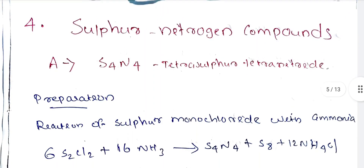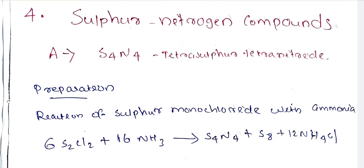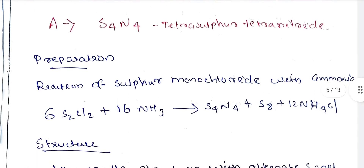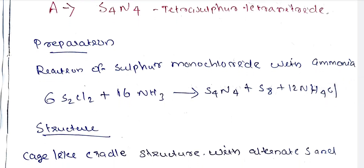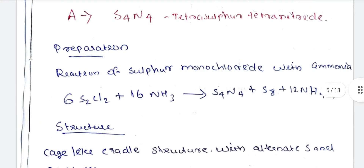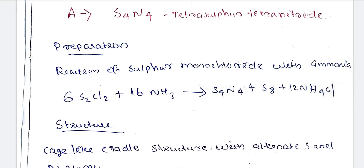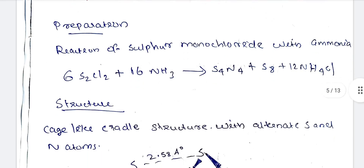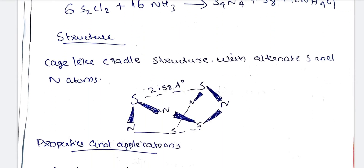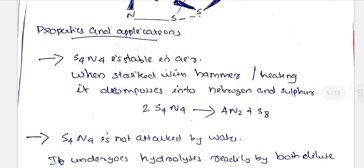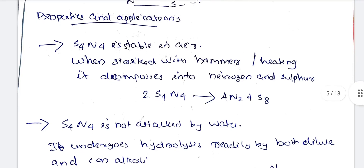Next are sulfur-nitrogen compounds. The first one is S4N4, tetrasulfur tetranitride. Its preparation involves the reaction of sulfur monochloride with ammonia: 6S2Cl2 plus 16NH3 gives S4N4. The structure is a cage-like cradle structure with alternating sulfur and nitrogen atoms. The properties of S4N4: it is stable in air, but when struck with a hammer or heated, it decomposes into nitrogen and sulfur.